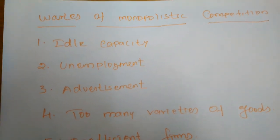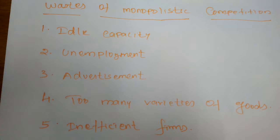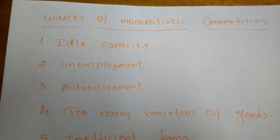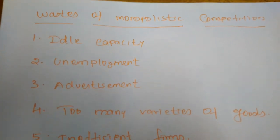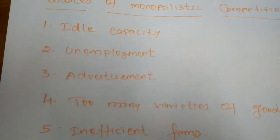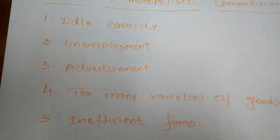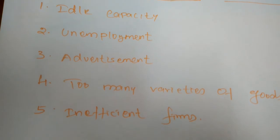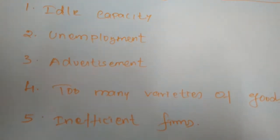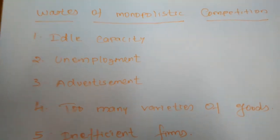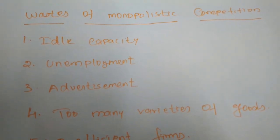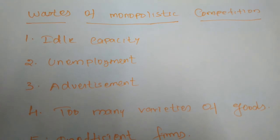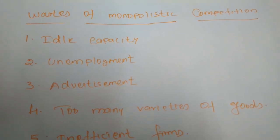Next, the wastes of monopolistic competition. In monopolistic competition, more wastage occurs. The first is idle capacity — idle capacity means the unutilized capacity, which is the difference between the optimum output that can be produced and the actual output produced by the firm. In monopolistic competition, companies do not produce the maximum commodities even if they have the power, based on demand for that commodity.